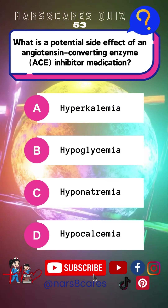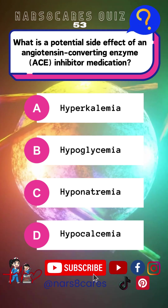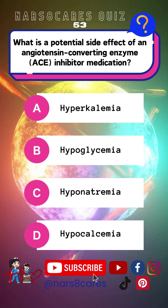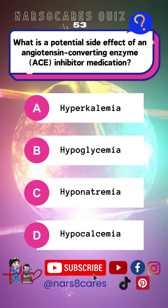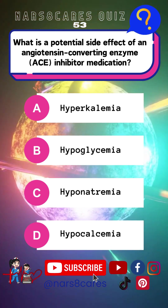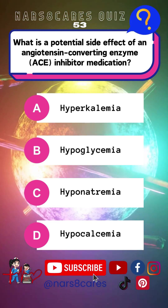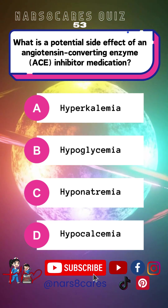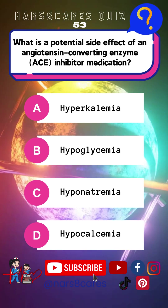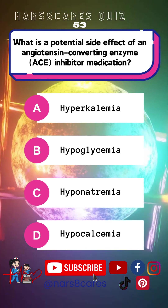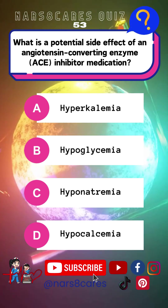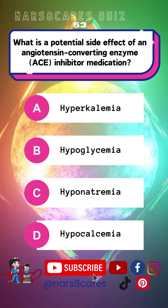53. What is a potential side effect of an angiotensin-converting enzyme (ACE) inhibitor medication? A. Hyperkalemia. B. Hypoglycemia. C. Hyponatremia. D. Hypocalcemia.